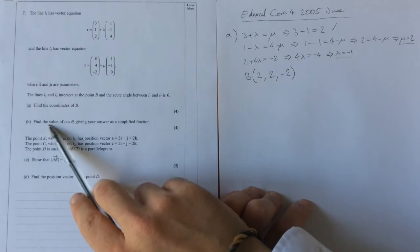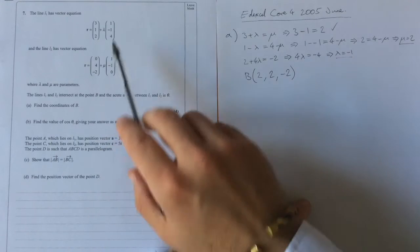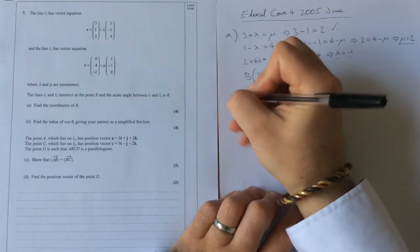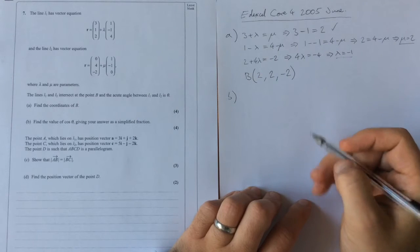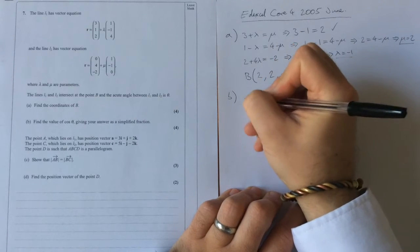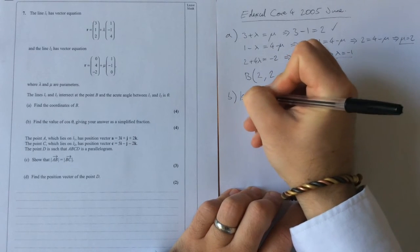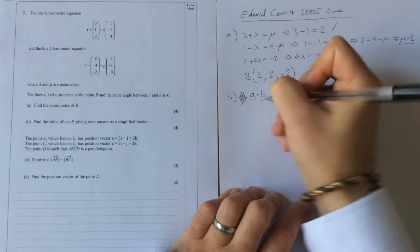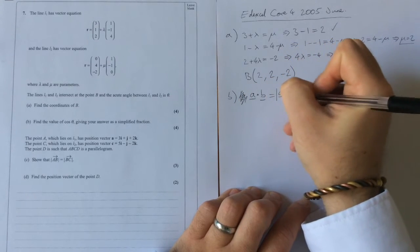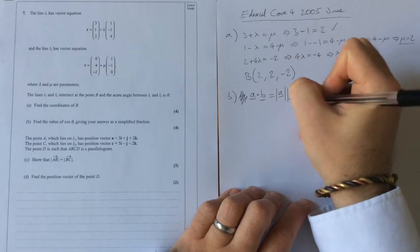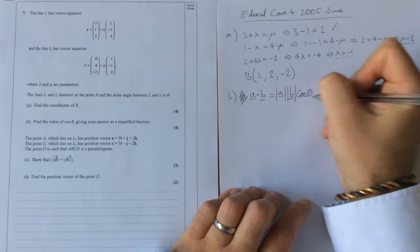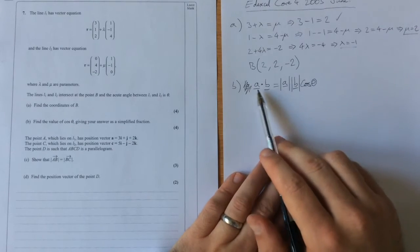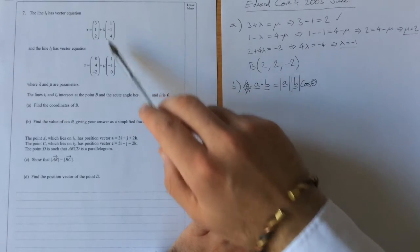The second part asks us to find the value of cos theta, the angle between these two lines. So what we're going to do there is we're going to use our little formula a dot b is equal to modulus a modulus b cos theta, so taking the dot product. What we're going to do here for a and b, these are going to be our direction vectors.